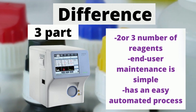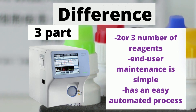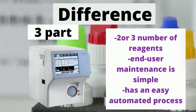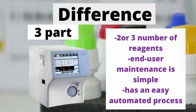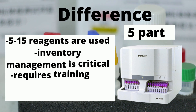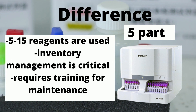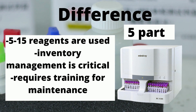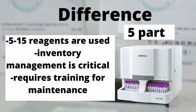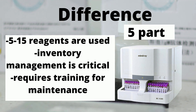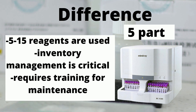Two or three reagents are used in the three-part analyzer, and its end-user maintenance is simpler than the five-part analyzer, with an easy automated process. Five to fifteen reagents are used in the five-part analyzer, and its inventory management is critical. This analyzer is somewhat complicated and requires training for maintenance.